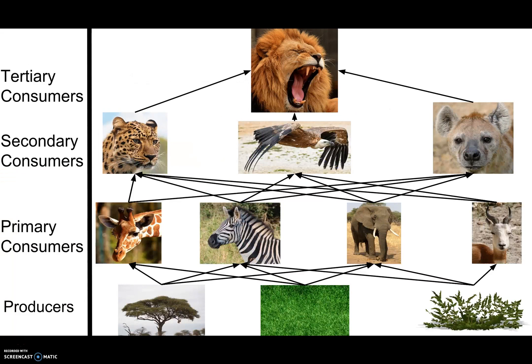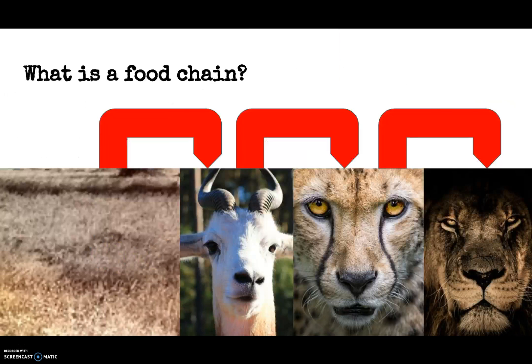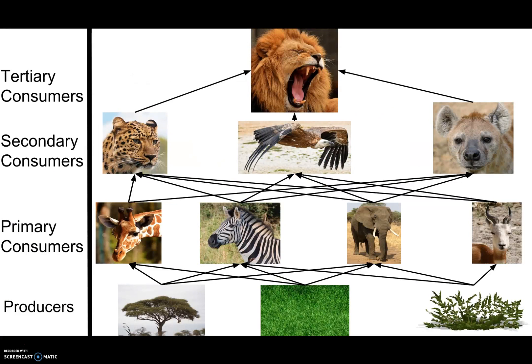depends on the cheetah for food. This is a food chain, and if you go back to the food chain, you can see that this food chain is inside of the food web. There are four levels: the producers, the primary consumers, the secondary consumers, and the tertiary consumers.